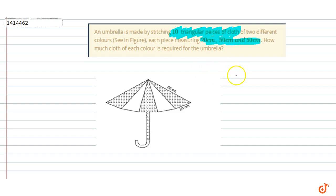We consider one triangular piece of cloth. The sides are given as: side a equals 20 centimeters, side b is 50 centimeters, and side c is 50 centimeters.